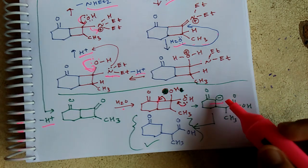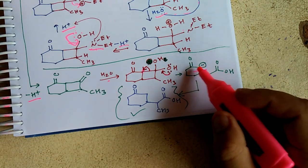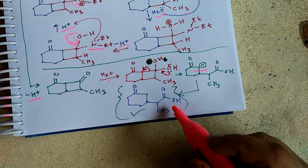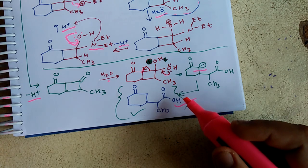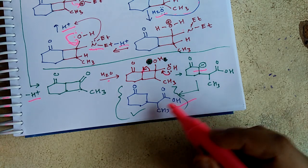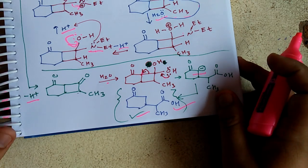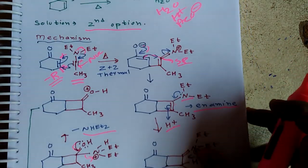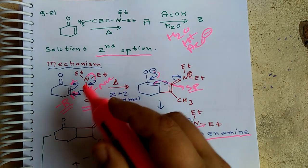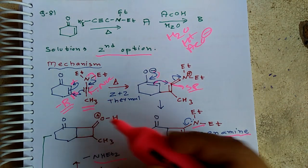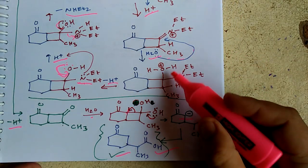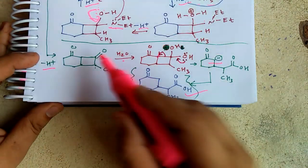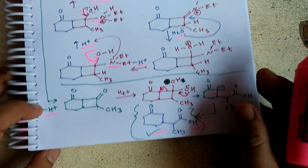Finally, this will get protonated and you end up with a beta-substituted product, as in Michael addition. But this is a modified version of Michael addition via thermal 2+2 addition. When you apply the concept of minus-R and plus-R effects, as well as the opening of the diol, it is straightforward because it depends on the fundamentals of organic chemistry.